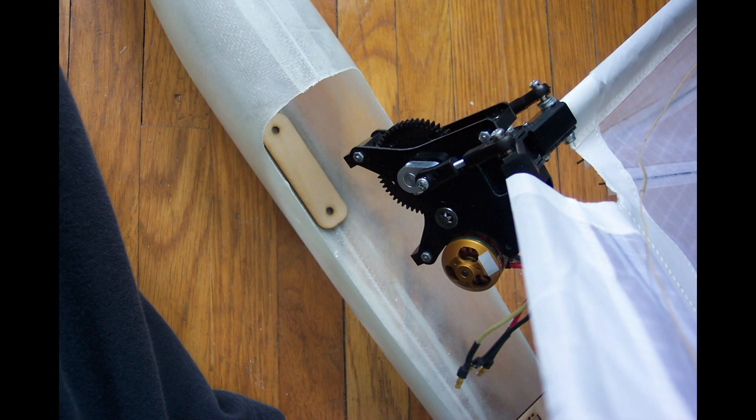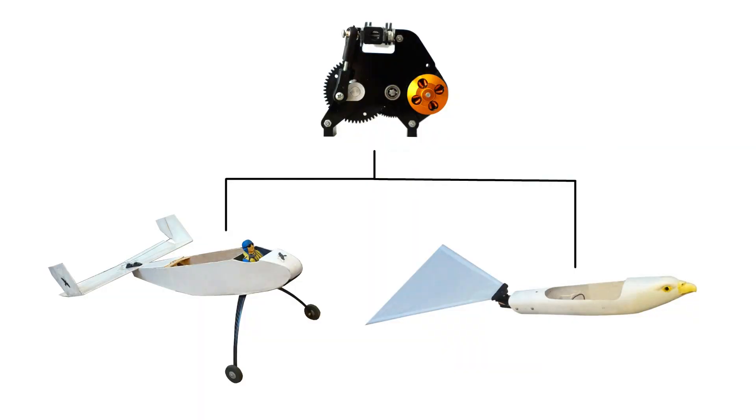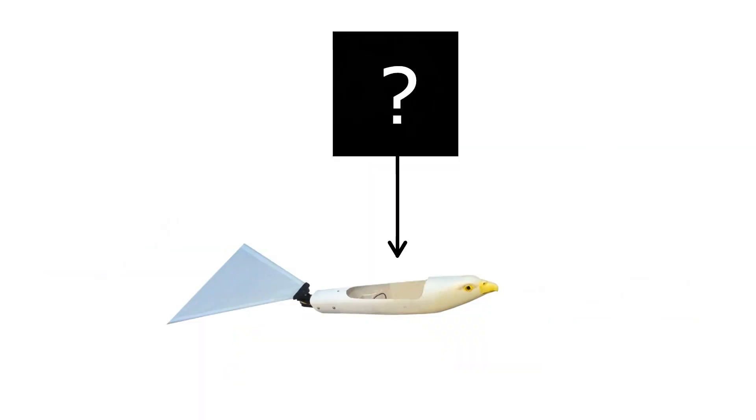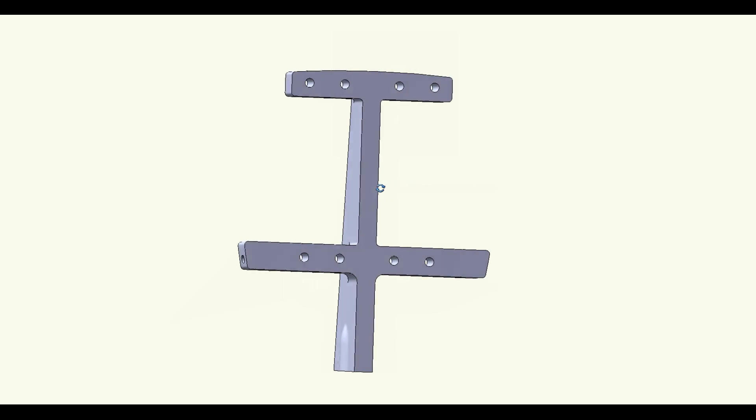When I first came up with the modular design, I imagined you could put the same gearbox into different ornithopter bodies. But what if we put something completely different instead of the gearbox? Subscribe to the channel so you can find out what I'm going to do.